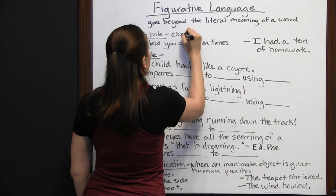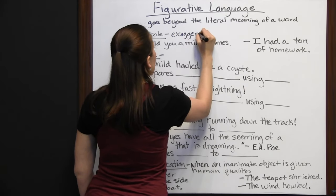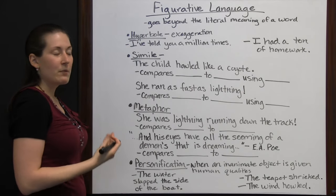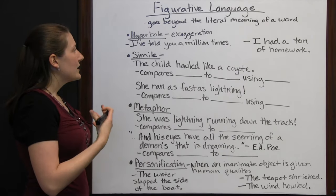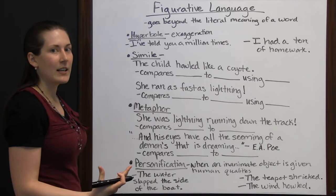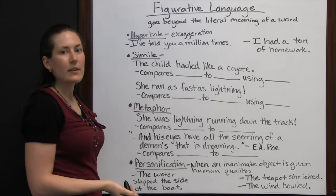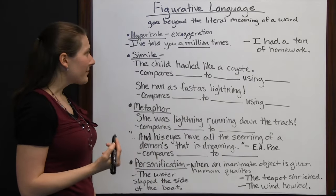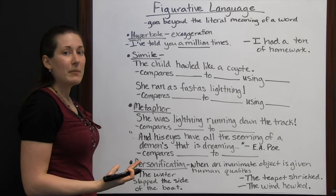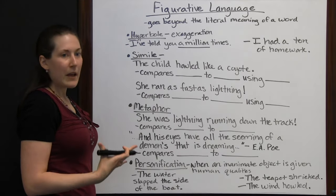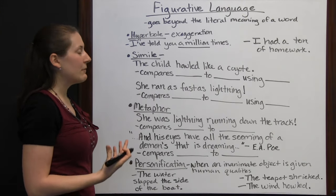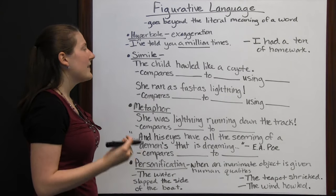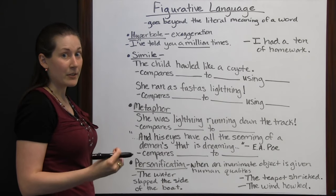Hyperbole is exaggeration. People will say something and you aren't meant to take it literally. You're meant to know it's an exaggeration, but it's there just to emphasize how strongly the author is trying to convey something. For instance, 'I've told you a million times.' Probably you haven't heard whatever your parent or teacher has said they've told you a million times — it's an exaggeration. It's hyperbole. It's meant to emphasize that they've already told you this many times before.